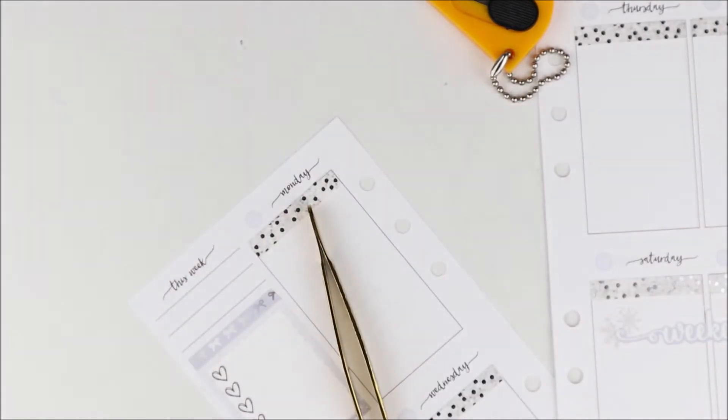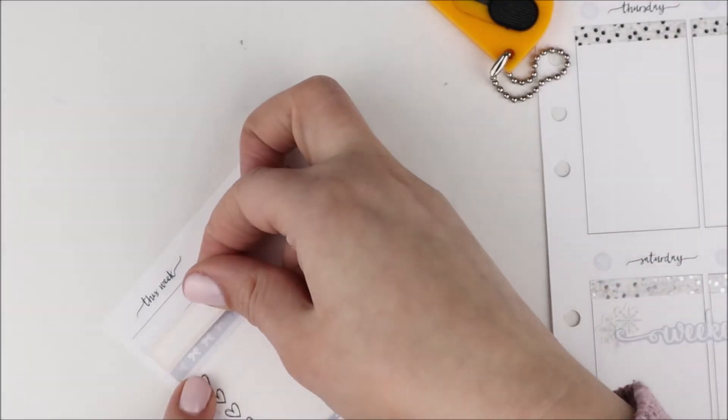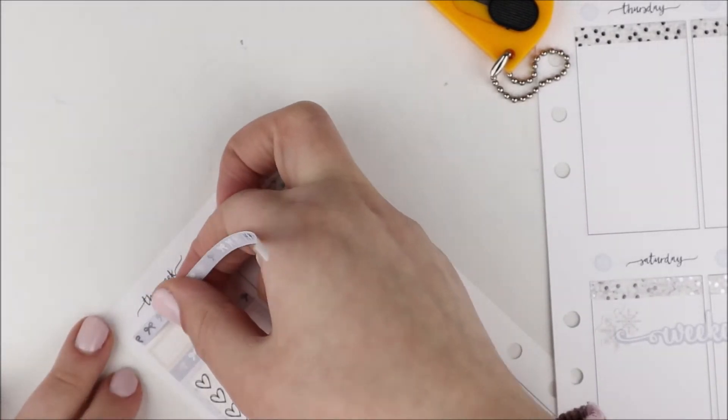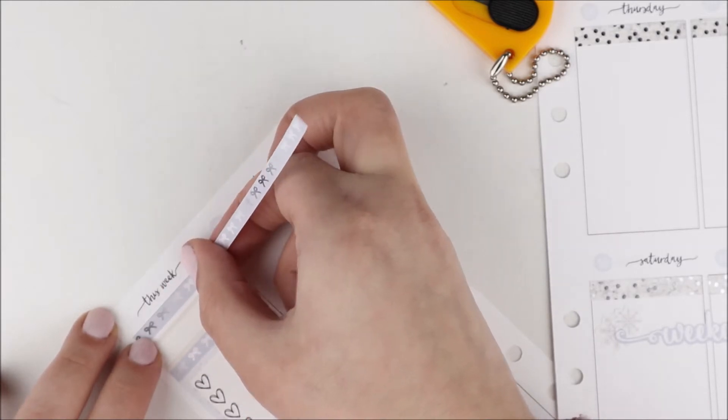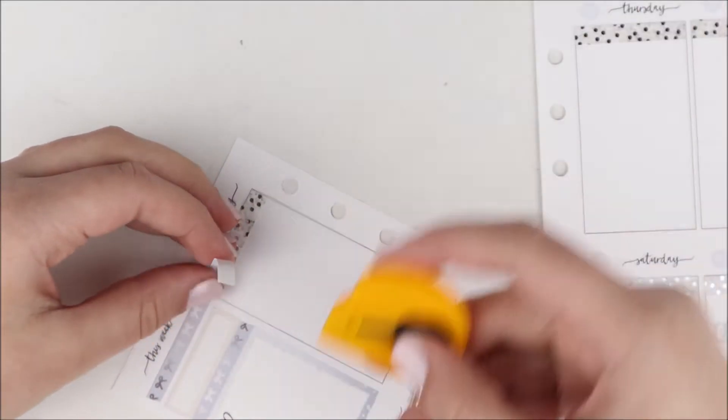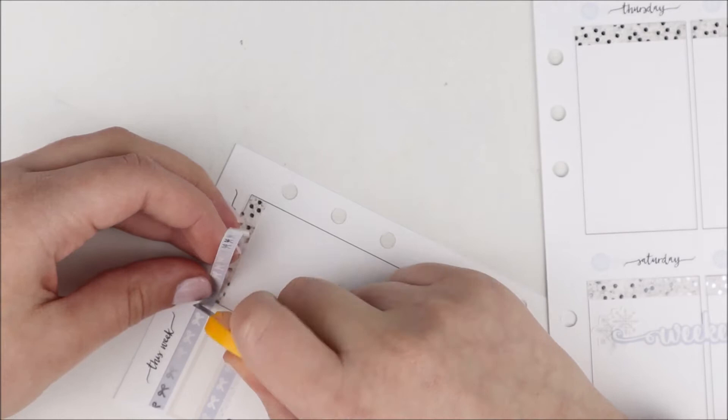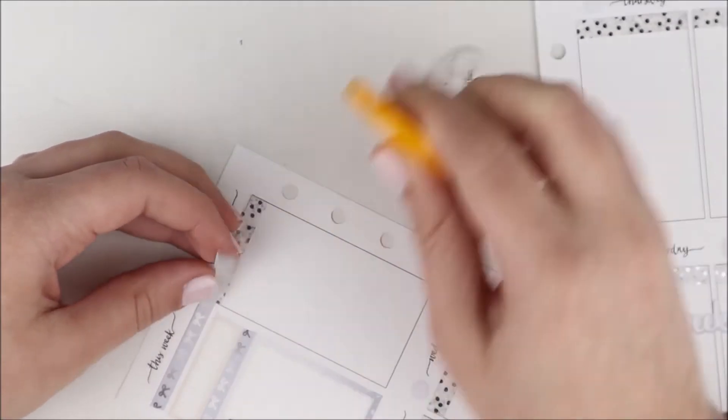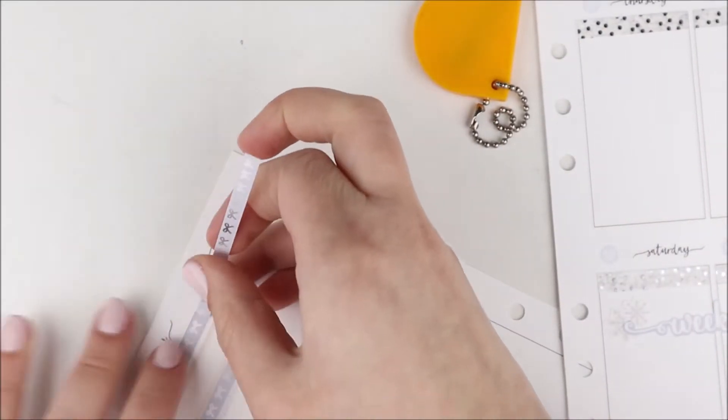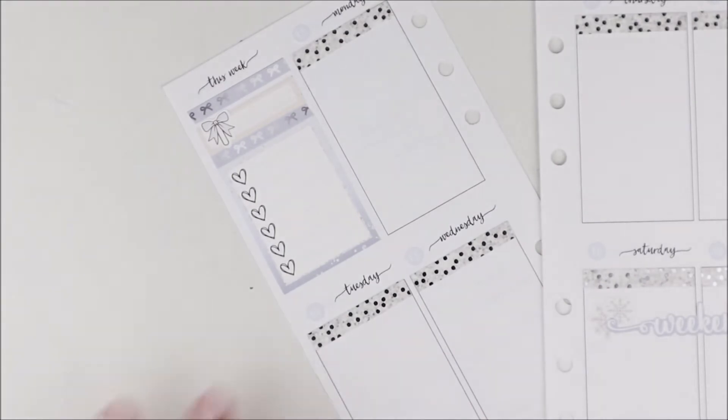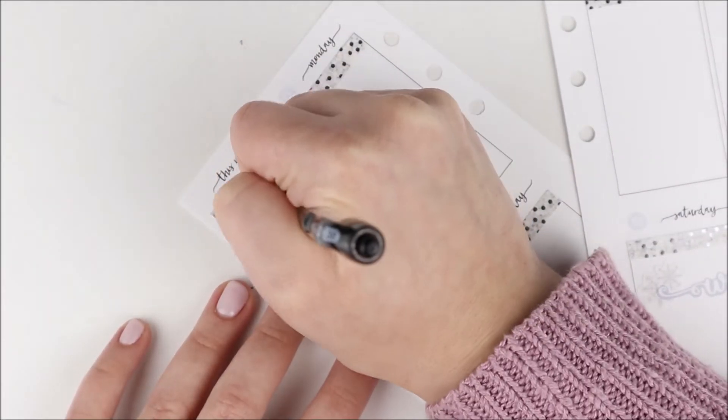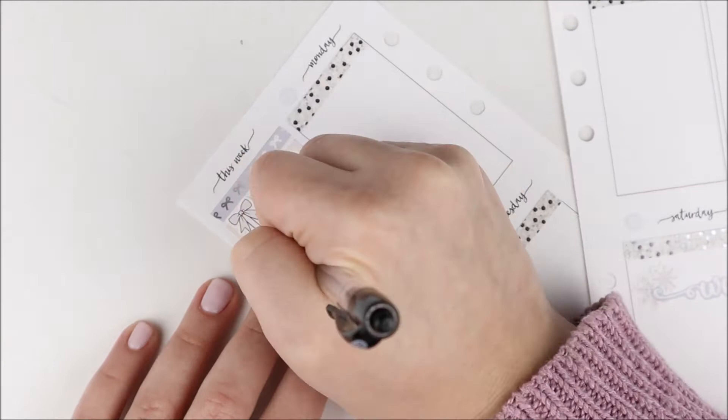In my sidebar, instead of headers I was using this heart checklist for like a to-do list. I just used this bow washi strip from the kit. I thought it would be cute, the colors matched and it had this faux silver foil so I thought that was pretty. I just put that on top of the heart checklist. Then I put a quarter box to write down what week of school I'm in.